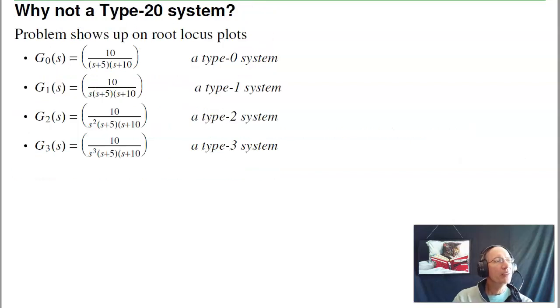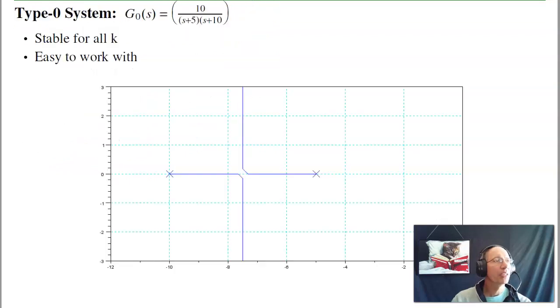I'll look at four different systems. I've got a pole at minus 5 minus 10, that's a type 0 system. Add a single pole at s equals 0 to make a type 1, add two poles and add three poles. And watch what happens to the root locus plot. If I have a type 0 system, the pole at minus 5 and minus 10 come together, split apart at the midpoint. Type 0 system is very easy to work with, very easy to control, they're always stable, at least this one's always stable.